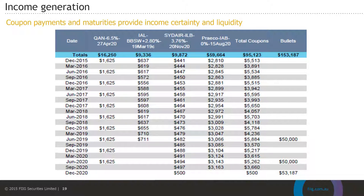Let's have a look at how a diversified bond portfolio works to generate blended coupons. What I have here is the cash flow statement of four bonds: a Qantas fixed rate bond, an Insurance Australia floating rate bond, a Sydney Airport capital indexed inflation linked bond, and a Preco inflation annuity capital index bond. You can see there that they generate very different coupon payments at very different times.